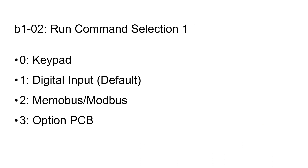B102 is easier. It defines where the drive will receive its run command. The run command tells the drive to output frequency, spinning the motor. The run command can come from a switch, button, or one of the various communication methods.